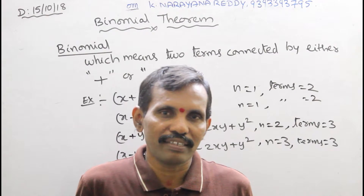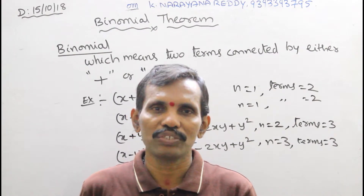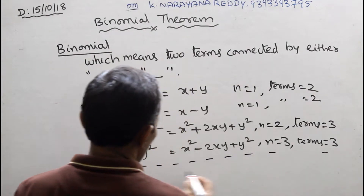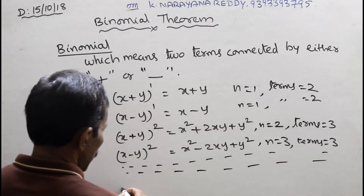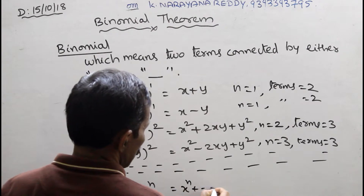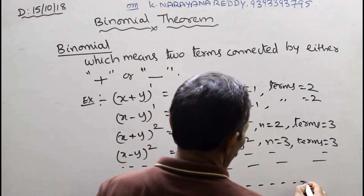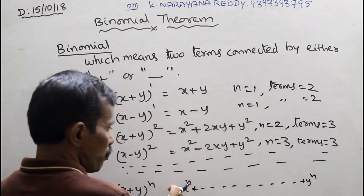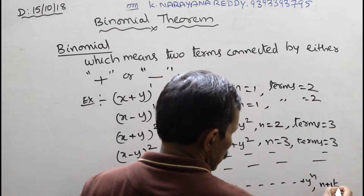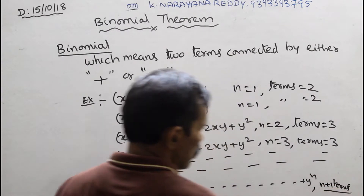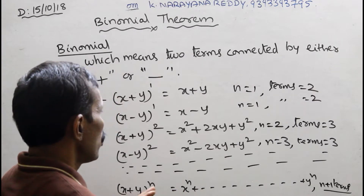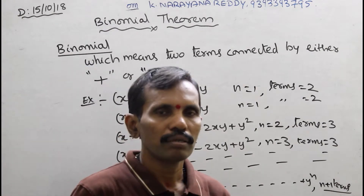If n is 100, the number of terms is 100 plus 1, that is 101. Now we can continue with the indexes. The expansion of x plus y to the power of n goes from x to the power of n up to y to the power of n, and the first and last coefficients are 1. That gives n plus 1 terms. In this way we can expand all values by using binomial theorem.